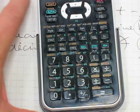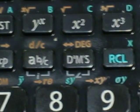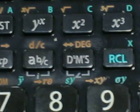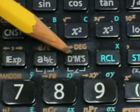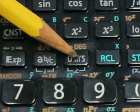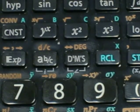It's above the eight and nine. This button here: D and a small circle, M, apostrophe, S. And above the button there's a second function that says DEG.